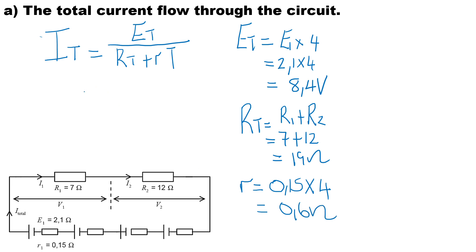Now we can substitute into our formula to calculate the current. The total EMF is 8.4 volts, the external resistance is 19 ohms, and the internal resistance is 0.6 ohms. Therefore, the total current for the circuit is 0.429 amps.